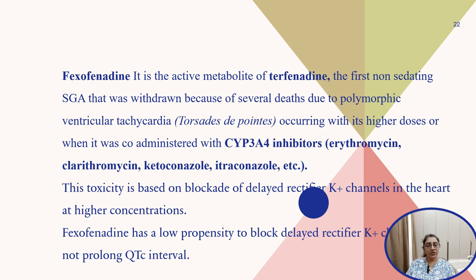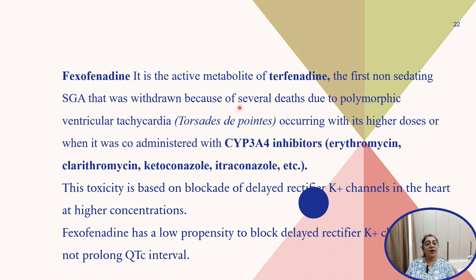Fexofenadine is the active metabolite of terfenadine. Terfenadine was the first non-sedating second generation antihistaminic but was withdrawn due to several deaths from polymorphic ventricular tachycardia occurring with high doses or when co-administered with CYP3A4 inhibitors like erythromycin, clarithromycin, ketoconazole, and itraconazole. These drugs increase terfenadine concentration by inhibiting CYP3A4, causing the higher concentration to block the delayed rectifying potassium channel in the heart, resulting in ventricular arrhythmia — also called torsades de pointes. Fexofenadine has low propensity to block this channel and does not prolong the QTc interval.